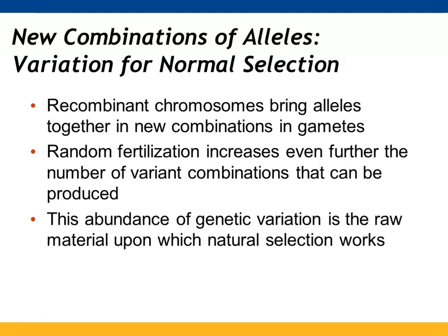Having these different combinations of alleles provides a lot of genetic variation — different combinations of gametes. Combined with random fertilization, which also increases those combinations, all of this genetic variation allows natural selection to work, determining which combination of alleles within a population provides the greatest likelihood of success for that population to survive and reproduce.